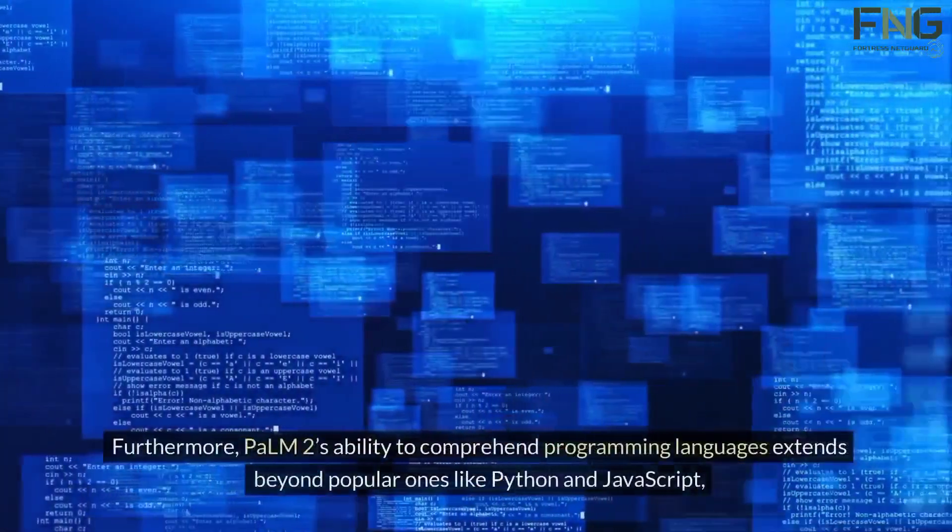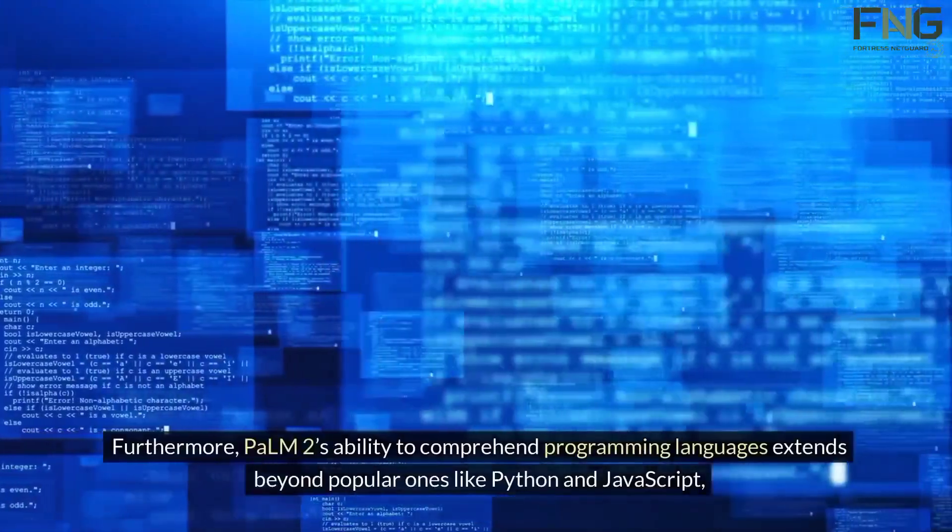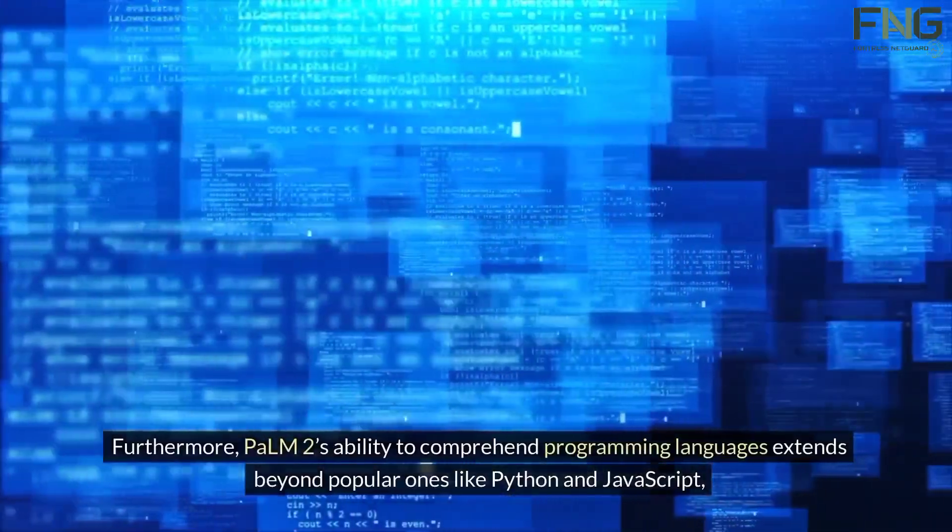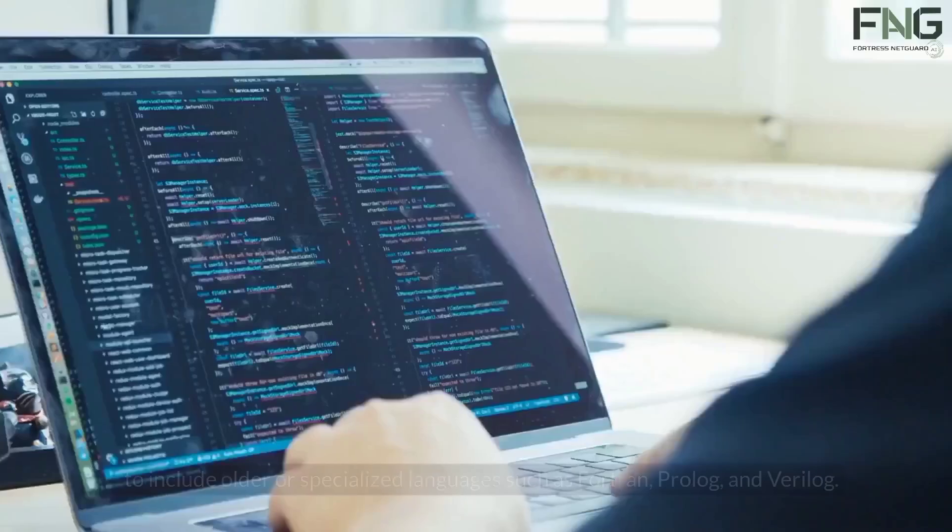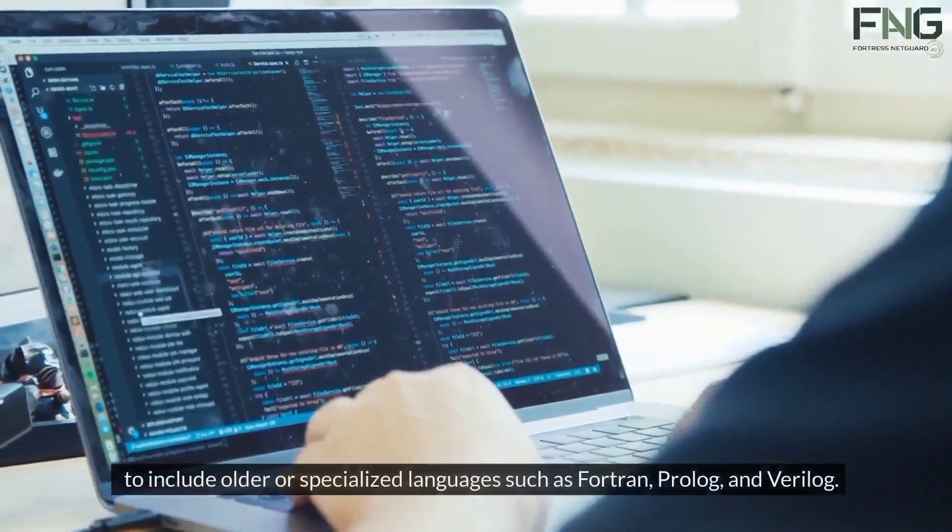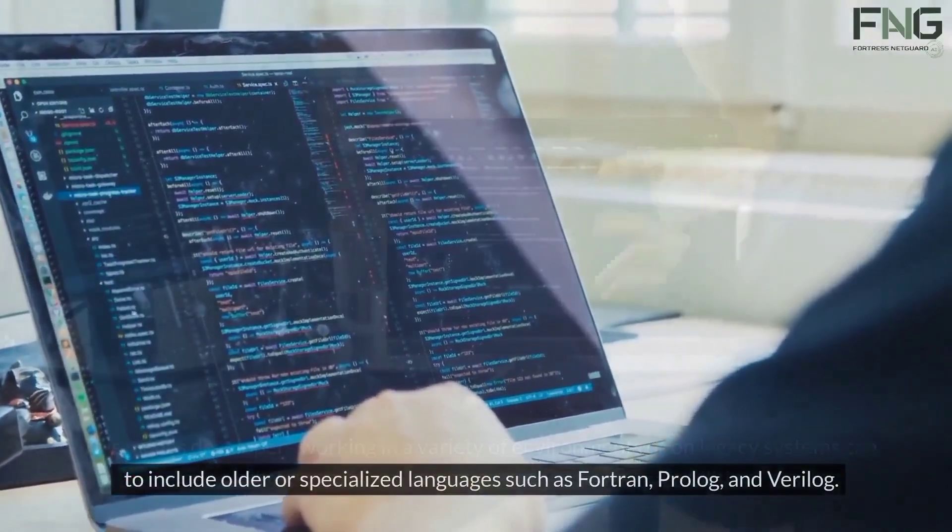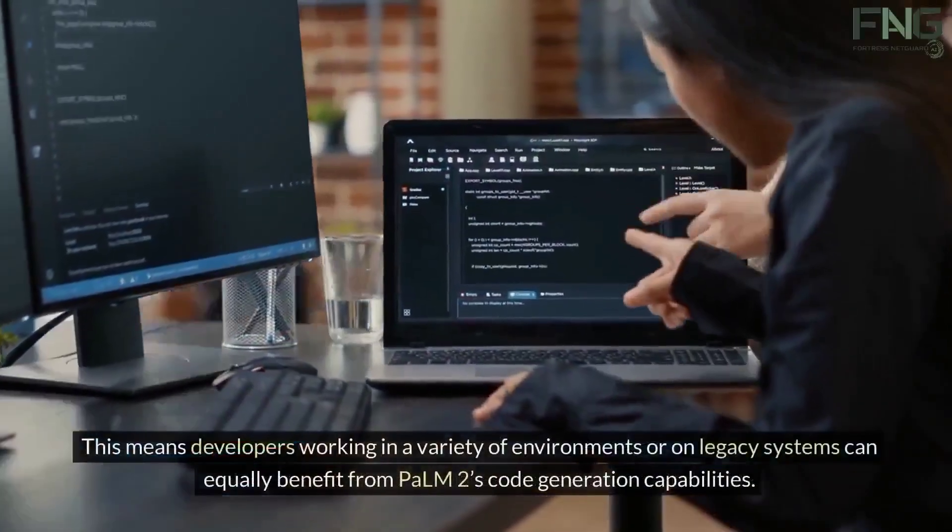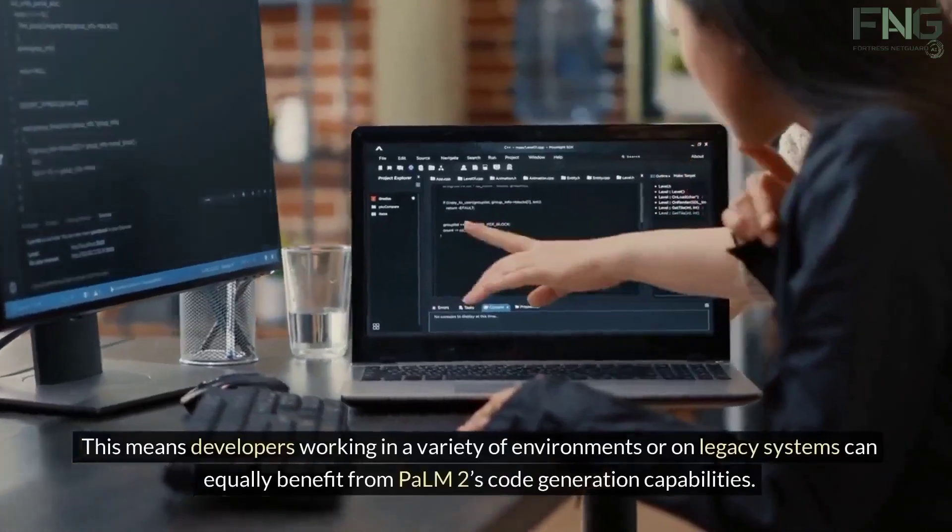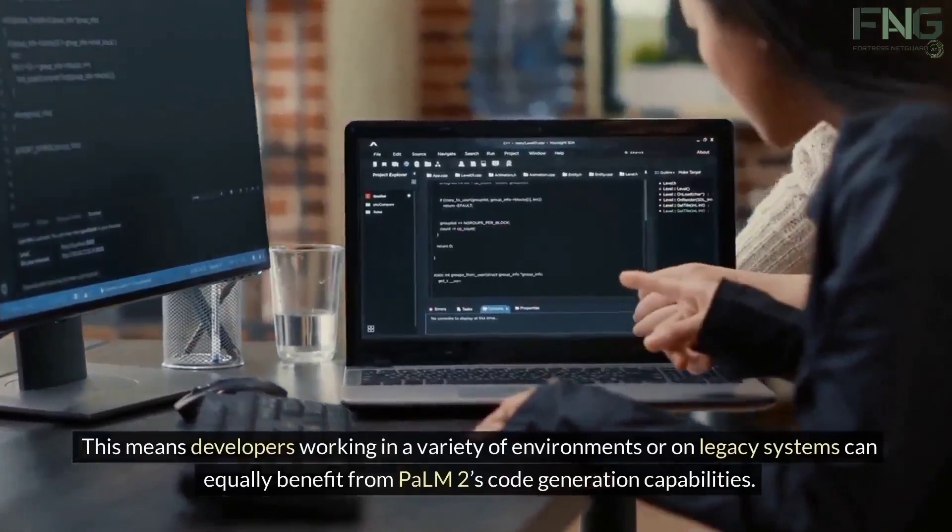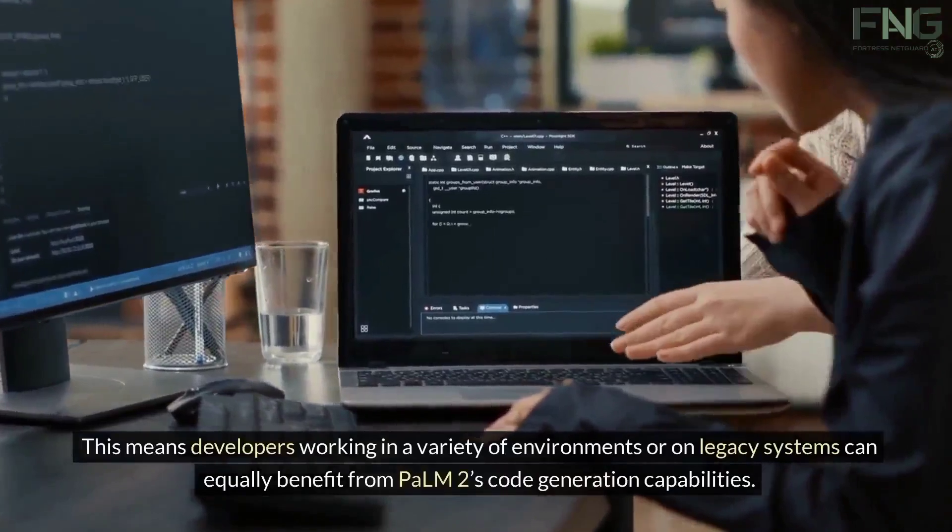Furthermore, Palm 2's ability to comprehend programming languages extends beyond popular ones like Python and JavaScript to include older or specialized languages such as Fortran, Prolog, and Verilog. This means developers working in a variety of environments or on legacy systems can equally benefit from Palm 2's code generation capabilities.